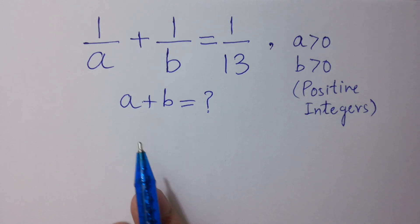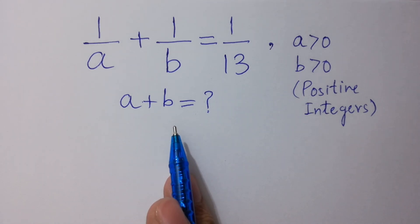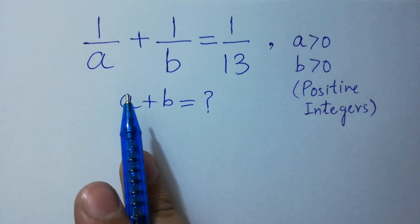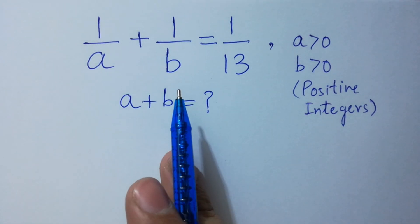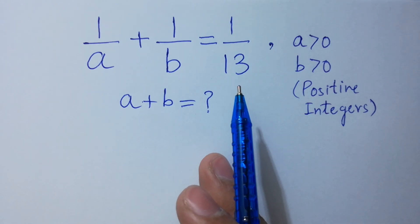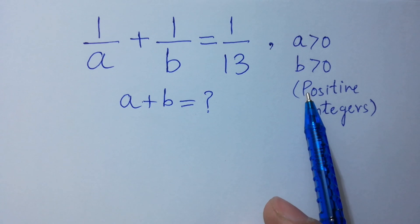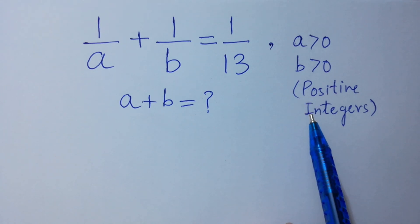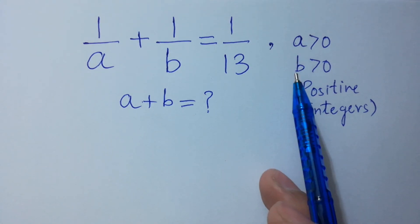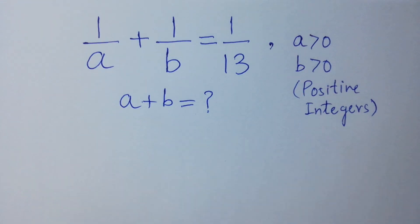Hello friends. Find the value of a plus b if 1 over a plus 1 over b equals 1 over 13, where a and b are positive integers, a is greater than 0 and b is greater than 0. Let's have a solution.